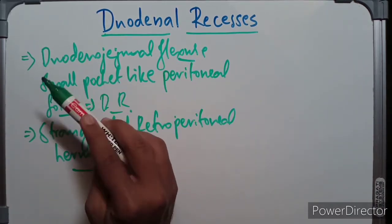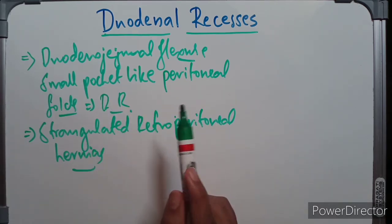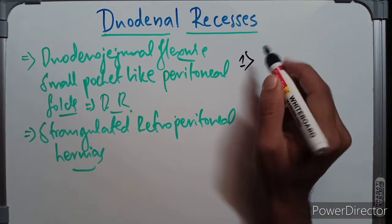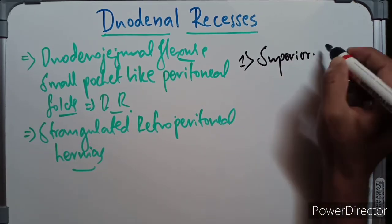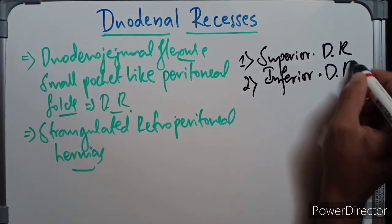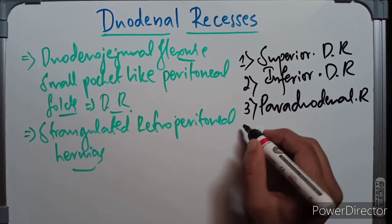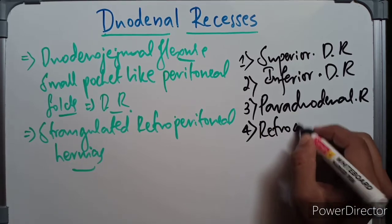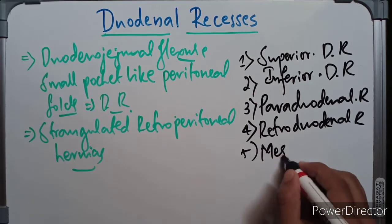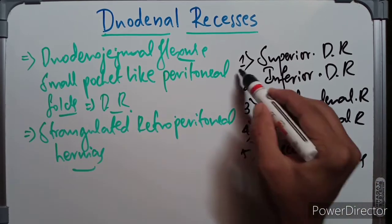Duodenal recesses are small pocket-like peritoneal folds situated behind the duodenal jejunal flexure. We have a total of five recesses: the superior duodenal recess, inferior duodenal recess, paraduodenal recess, retroduodenal recess, and the mesenteroparietal recess.